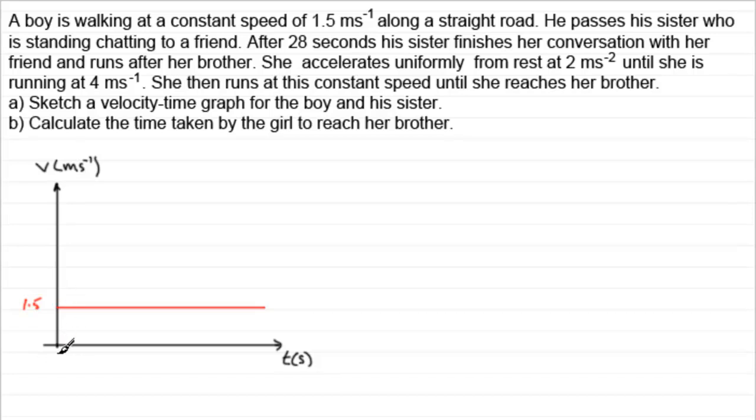This is the point when t is 0 where the boy passes his sister. Now we know that after 28 seconds the boy's sister has finished her conversation and starts to run after her brother. Well let's just say that this is the 28 seconds here. Now she starts to run after the brother and we're told that she starts from rest and accelerates at a rate of 2 meters per second squared until she reaches a speed of 4 meters per second. So let's just mark the 4 meters per second in. Let's say it's about here.